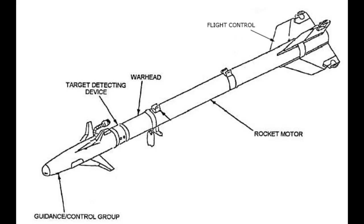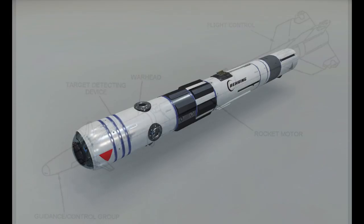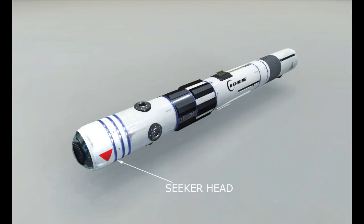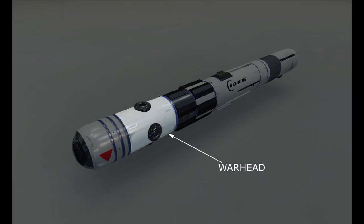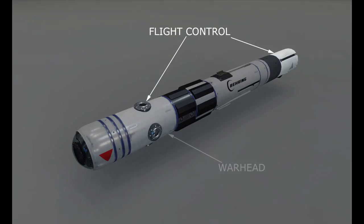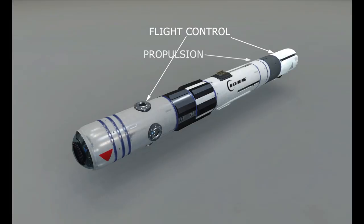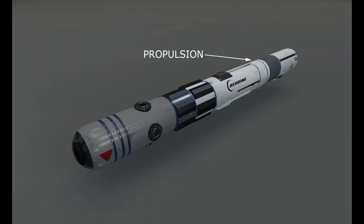Real missiles are made up of four major components, all of which are emulated in Star Citizen: the seeker head or guidance control section, the warhead, the flight control system, and the propulsion system.